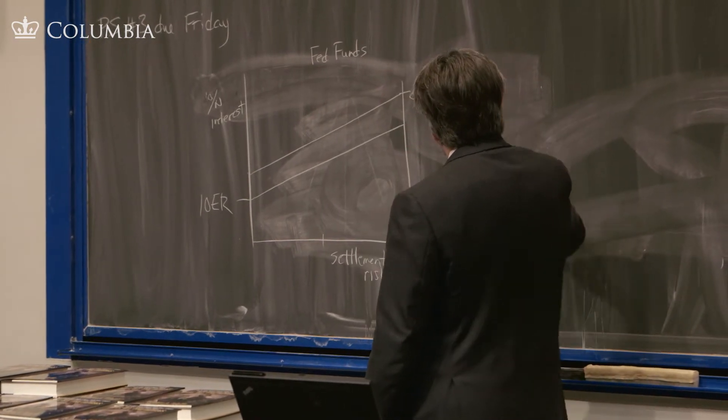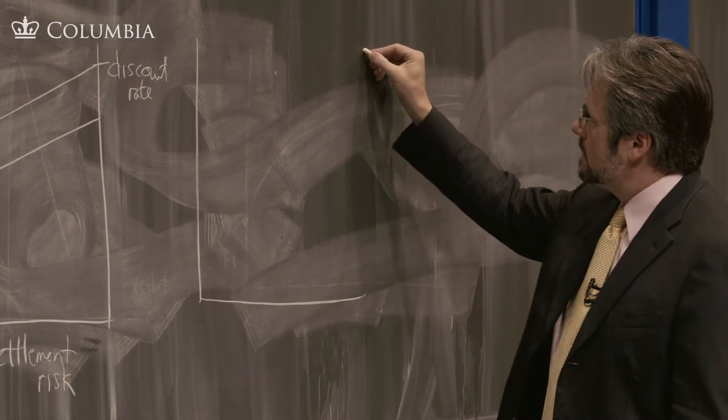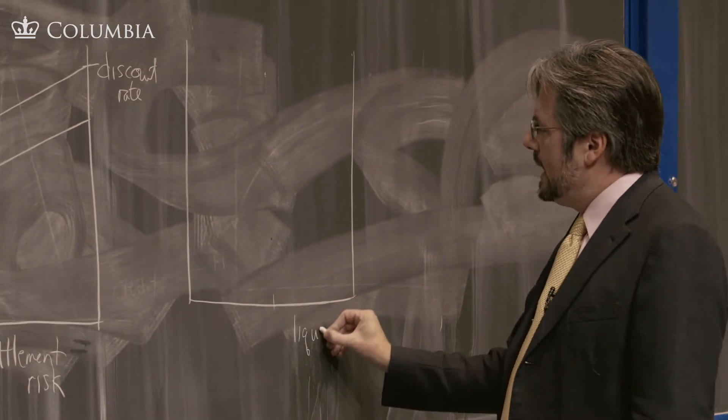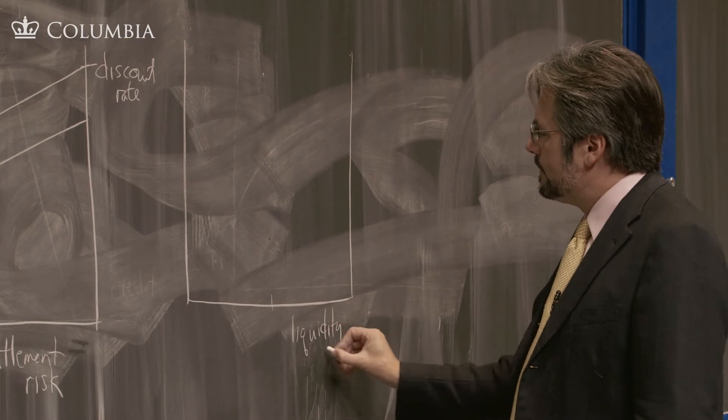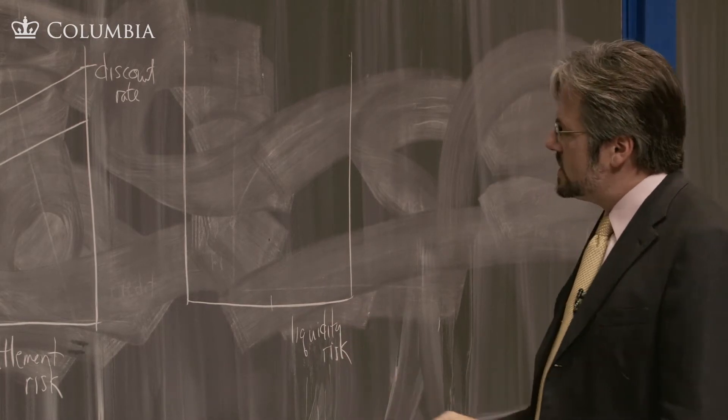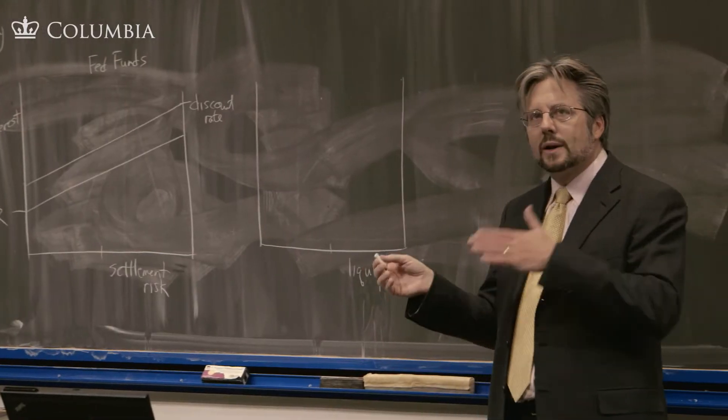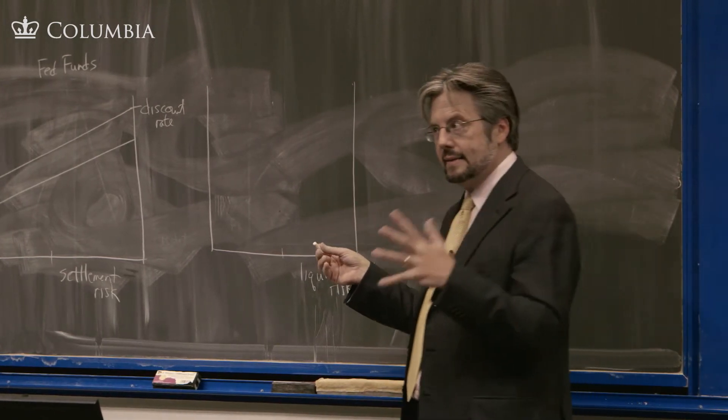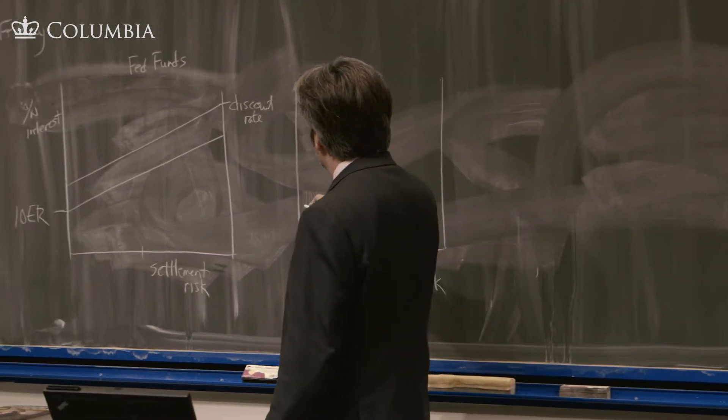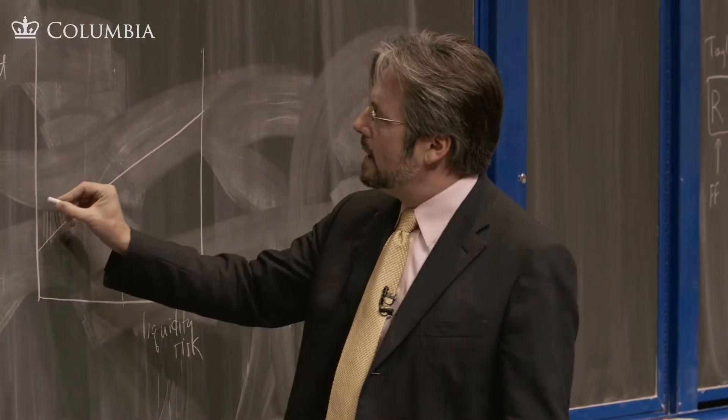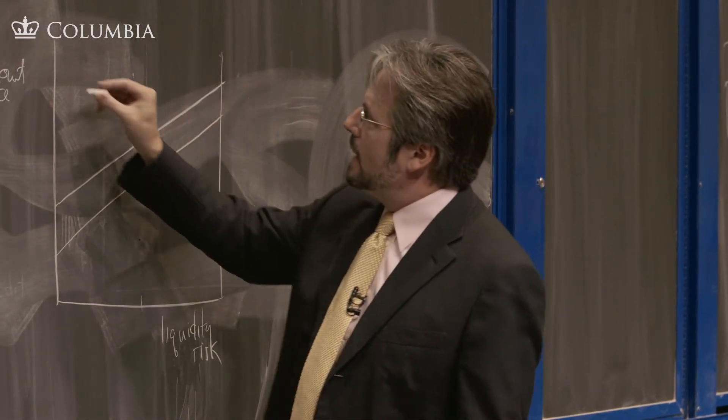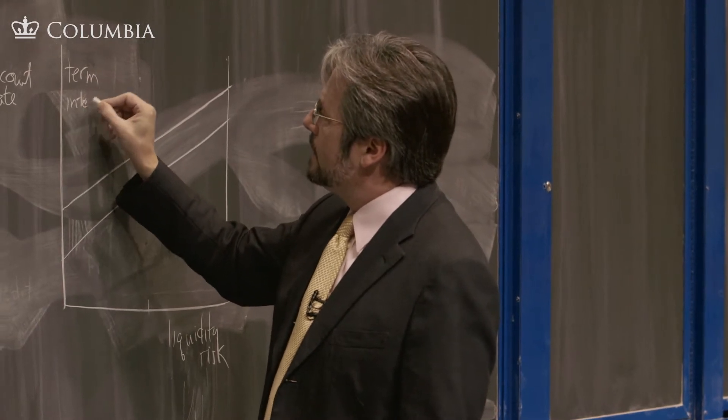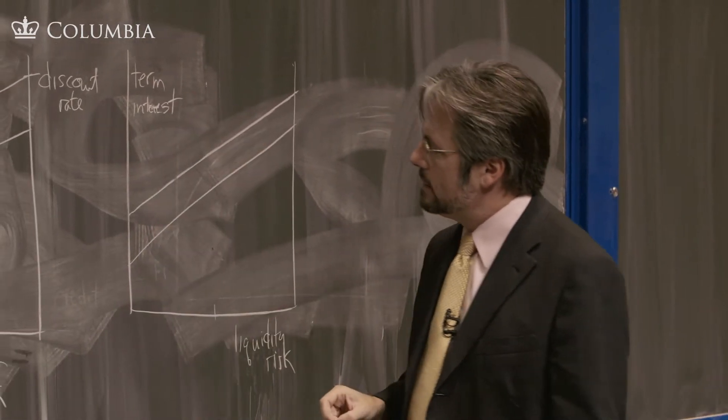And then we had a second tier where we were talking about liquidity risk proper, which is the risk involved in borrowing short and lending long or borrowing overnight and lending for three months. That was what we had in mind. And again, we had upward sloping. And this was a term interest rate here, not overnight.